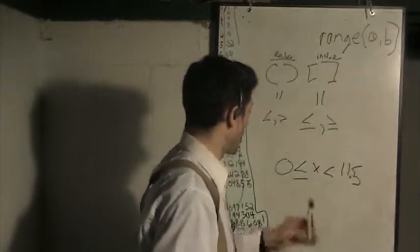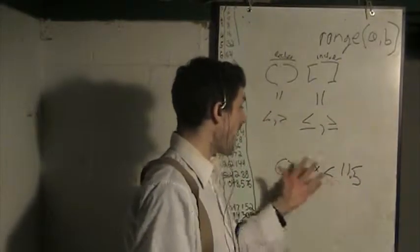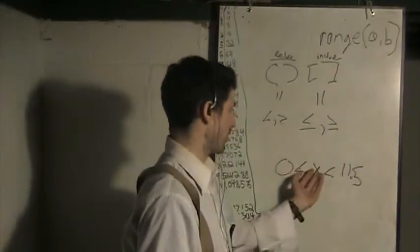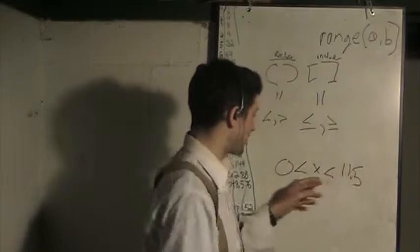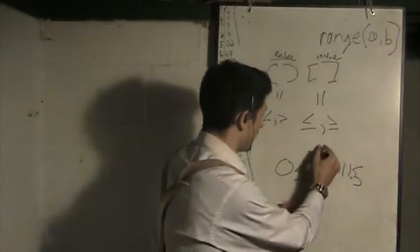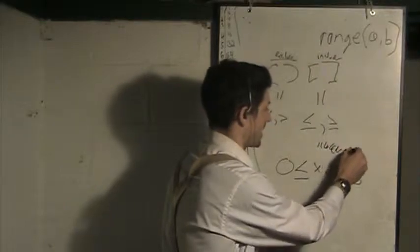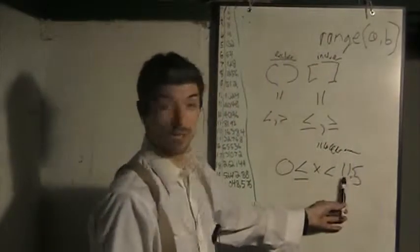In math, you should know that that means every single number, every single rational fraction, every single irrational number, all the way up to 11.5. This means like 0, all the way up to 11.499999999999999, all of it, but not including 11.5.